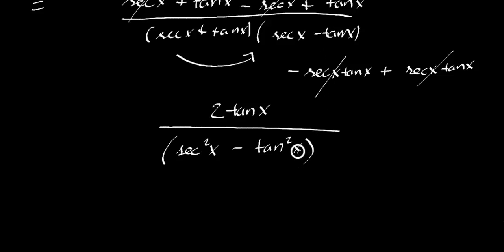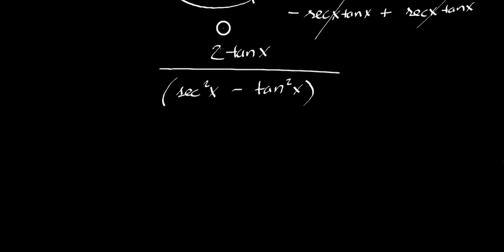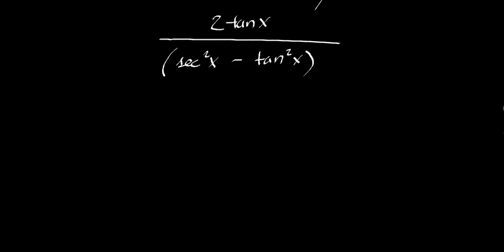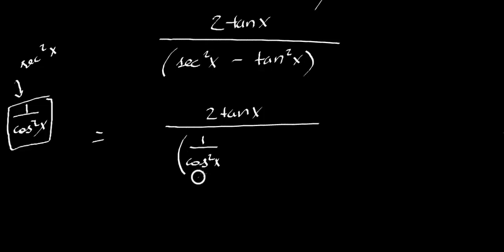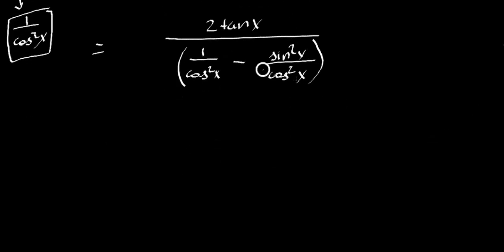Our numerator seems pretty clean, but our denominator looks messy — we want to get rid of this arithmetic. What is secant²x? Secant²x is just 1 over cosine² — that's secant, basically the reciprocal of cosine, squared. And tangent²x is just sin²x over cos²x. We still have our numerator over 1/cos²x, and we're just rewriting secant squared. Tangent is sin²x over cosine — hopefully you know that.